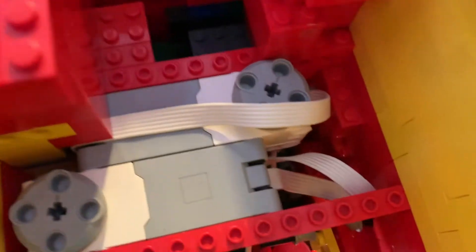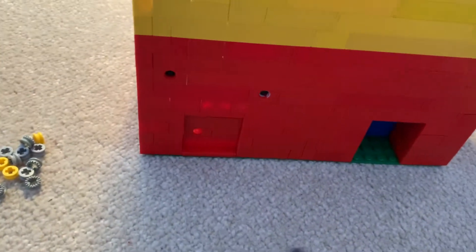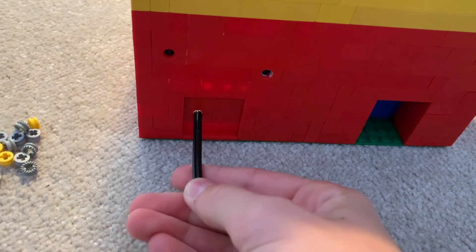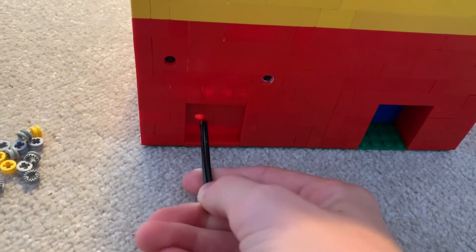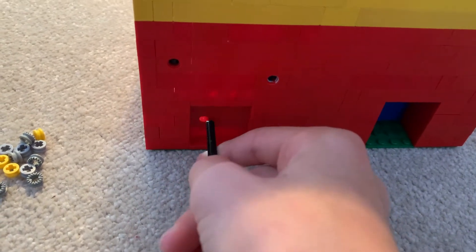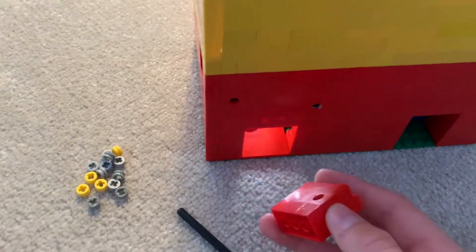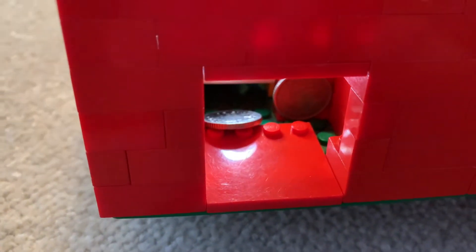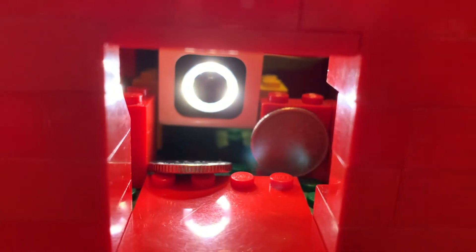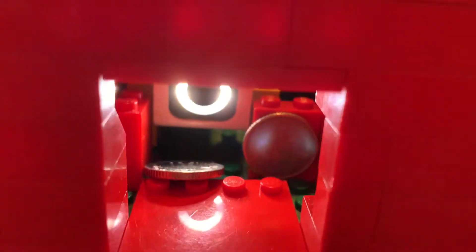And then you've got the same on the other side. And then protecting the money, we've got a light sensor. So it detects the money falling down into the tray.